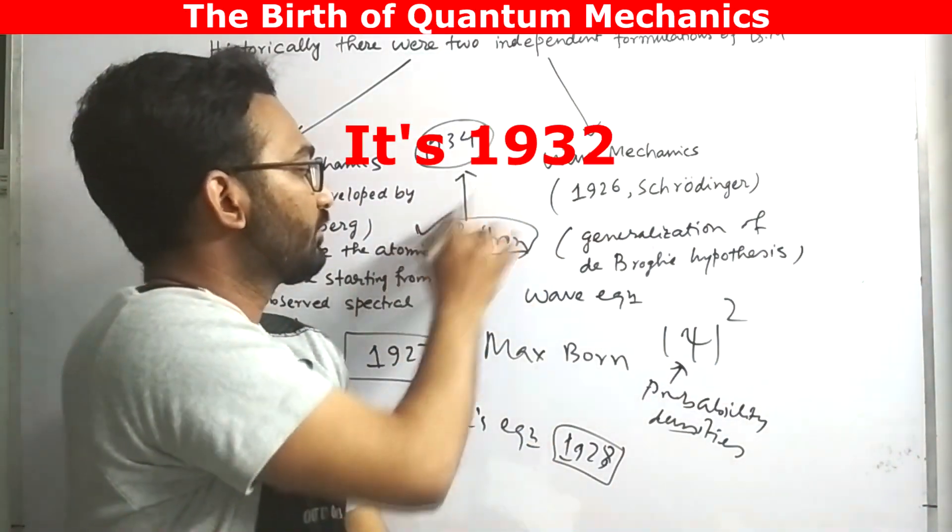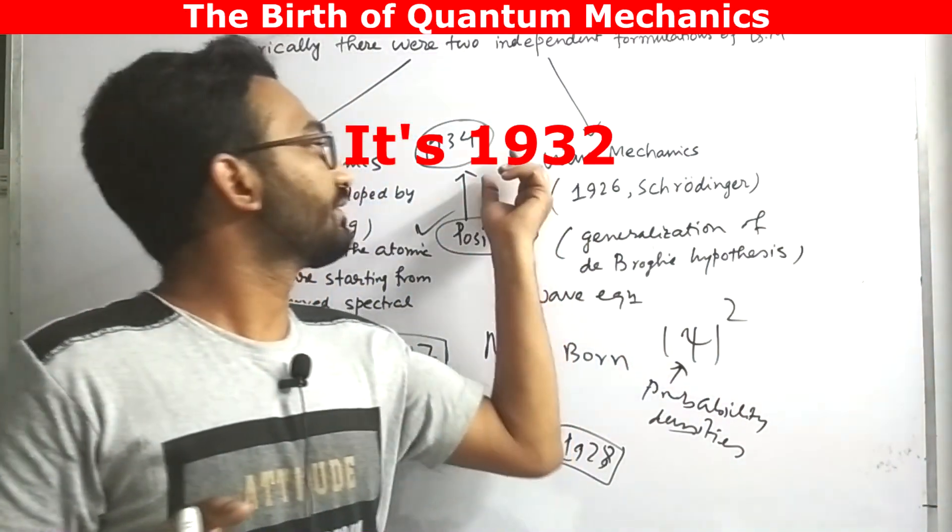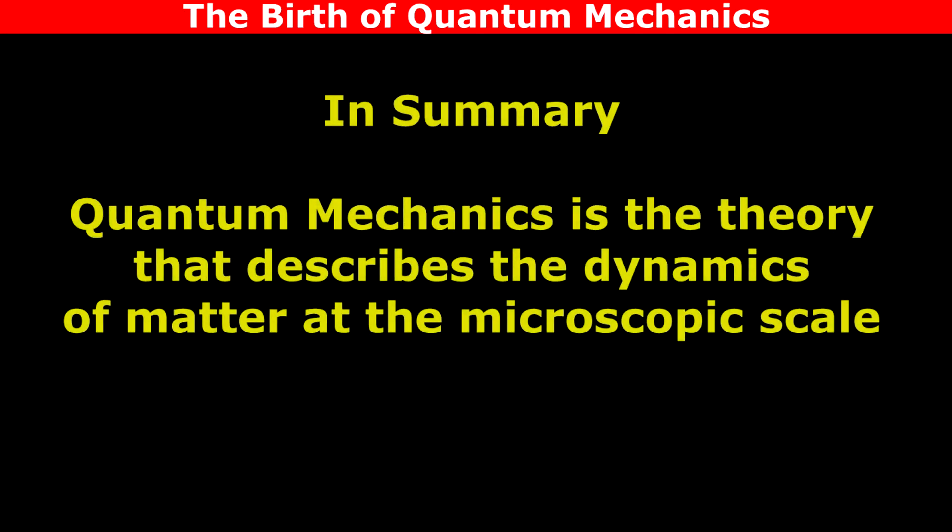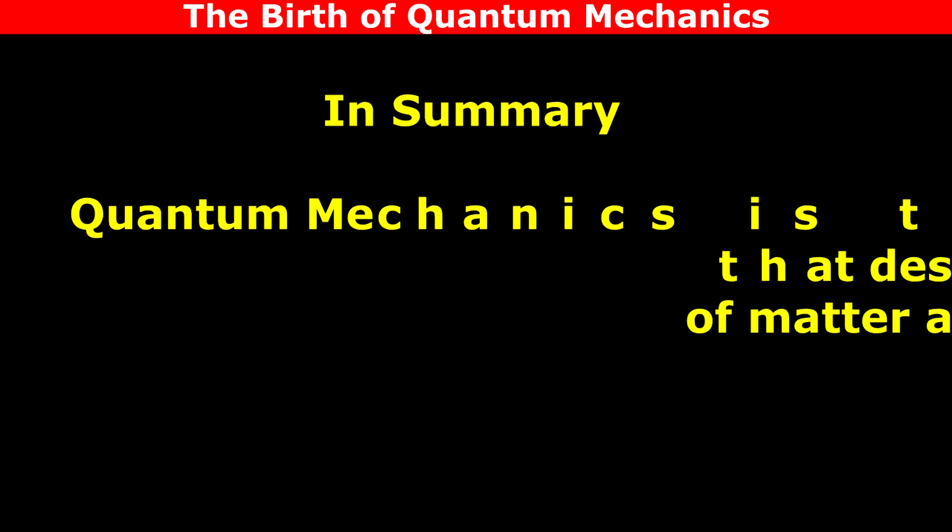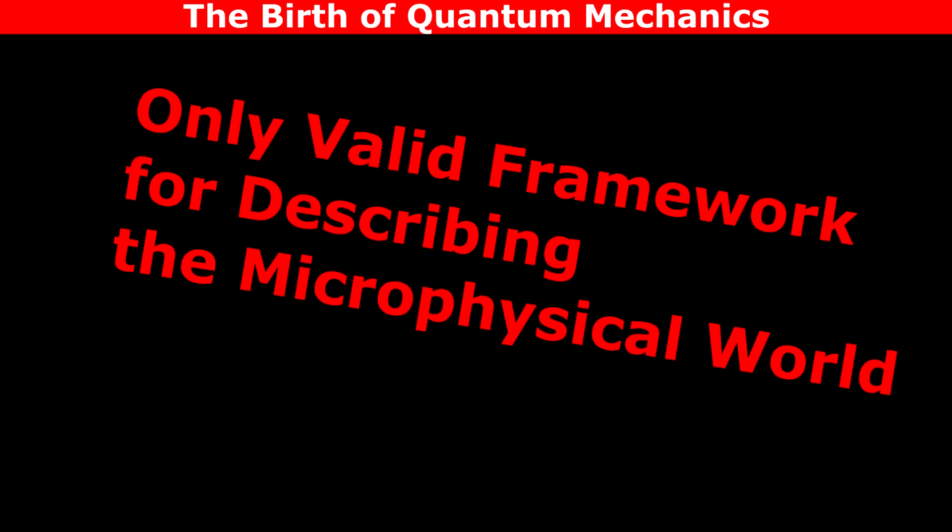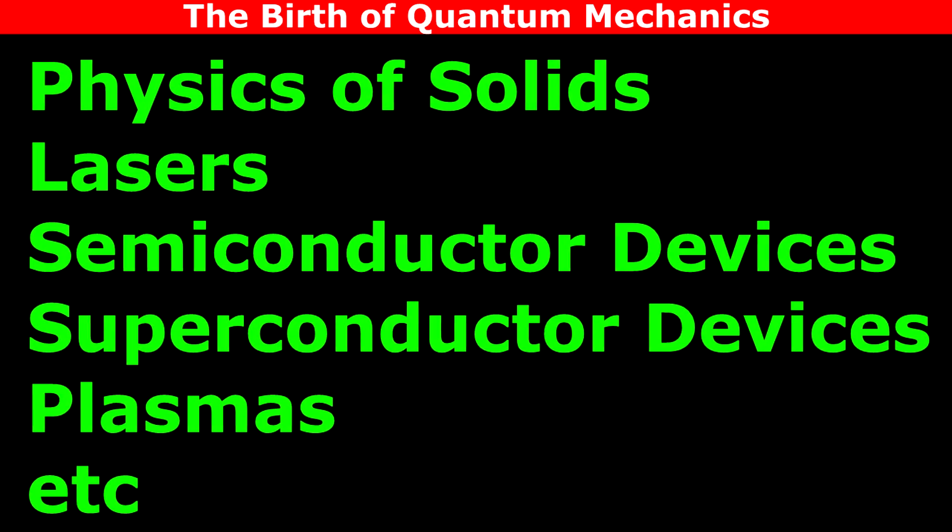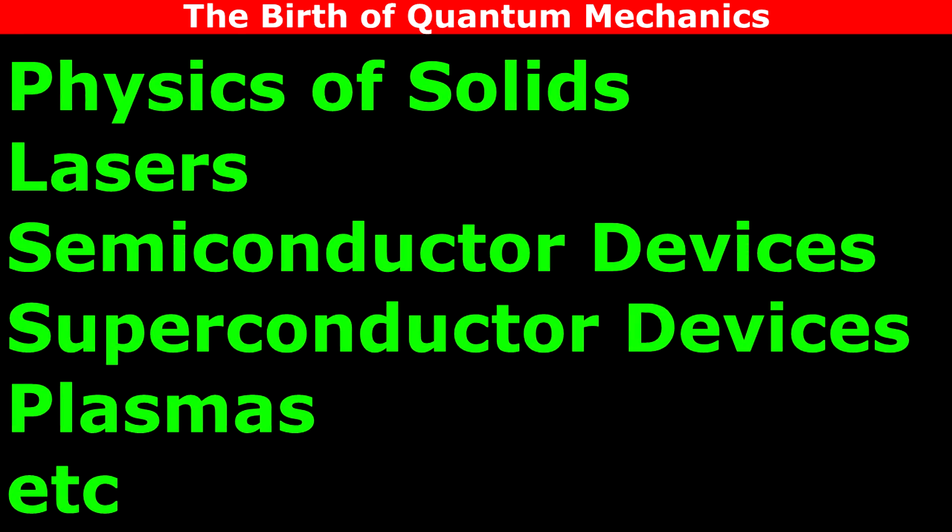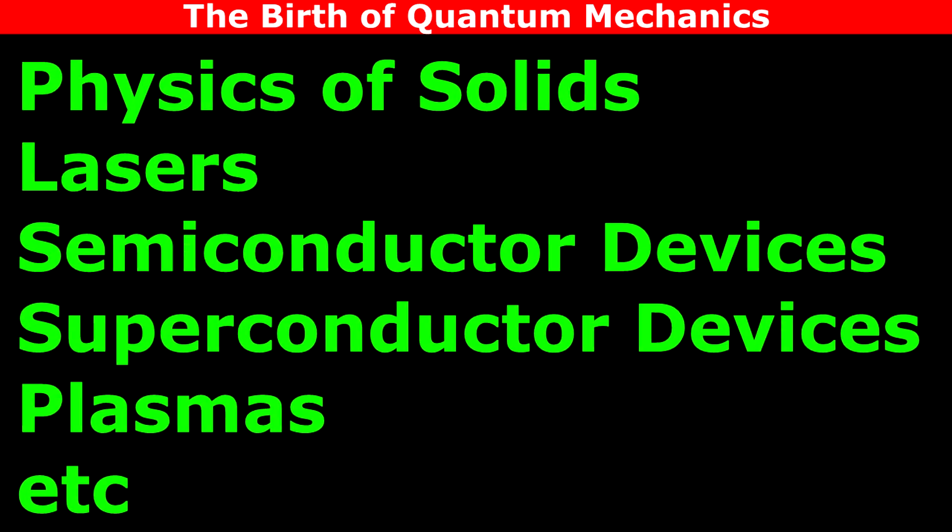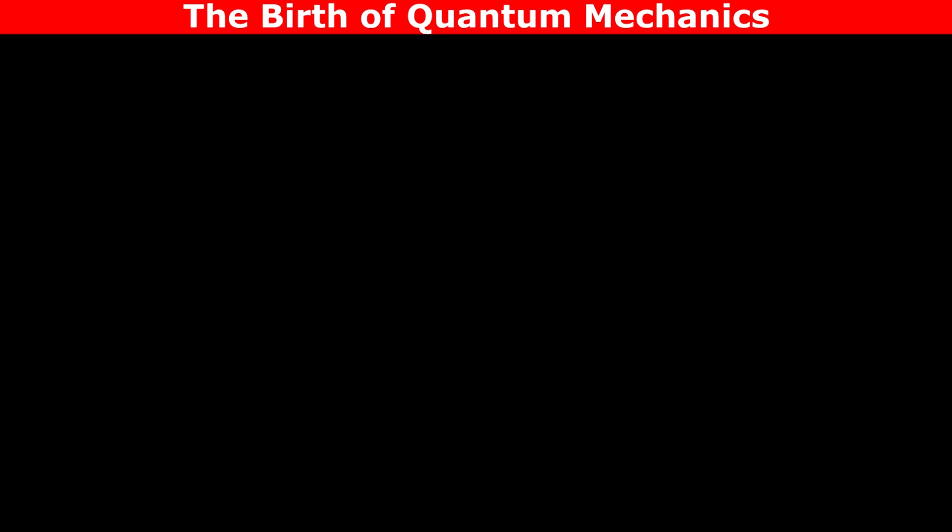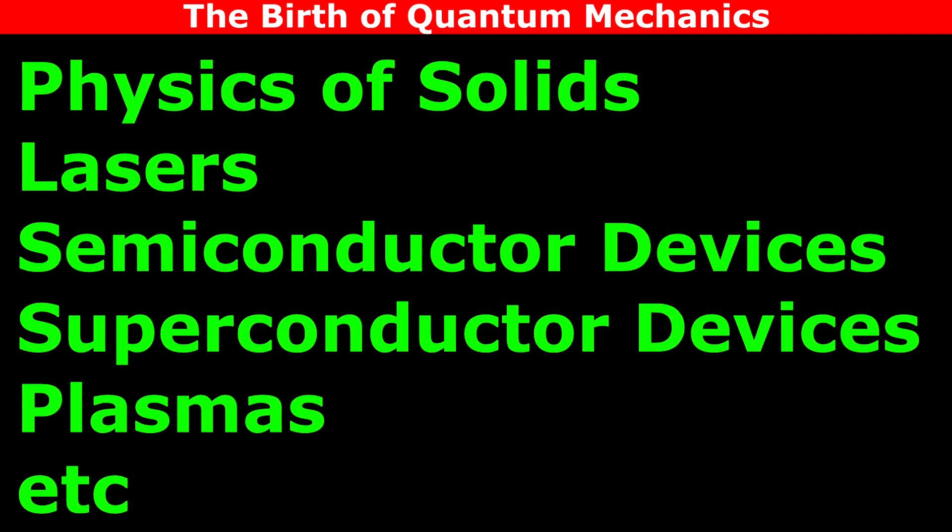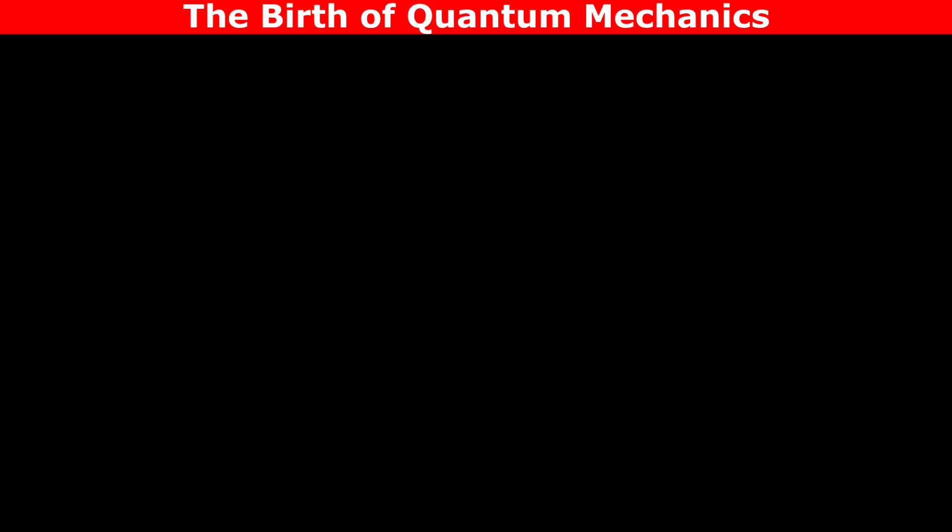In summary, quantum mechanics is the theory that describes the dynamics of matter at the microscopic level. Quantum mechanics is the only valid framework for describing the microphysical world. It is vital for understanding the physics of solids, lasers, semiconductors, superconductor devices, plasmas, etc. In short, quantum mechanics is the founding basis of all modern physics: solid state, molecular, atomic, nuclear, and particle physics, optics, thermodynamics, statistical mechanics, and so on. Not only that, it is also considered to be the foundation of chemistry and biology.